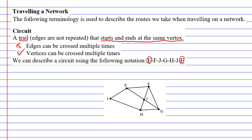Starting at E we go to vertex F, then to vertex J, then to vertex G, then over to vertex H, then back to J — notice we've passed through J a second time but that's okay — and then all the way back to E. You will notice that we started and ended at the same vertex, we never crossed over an edge more than once, and we did cross a vertex more than once.